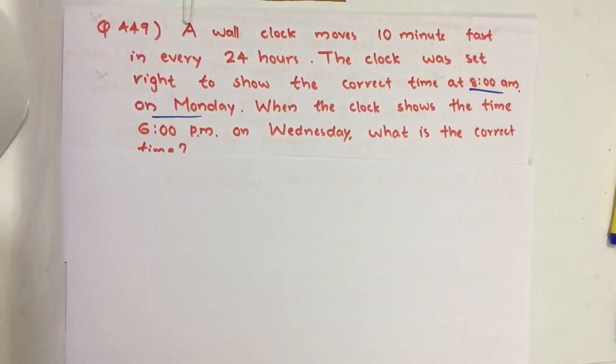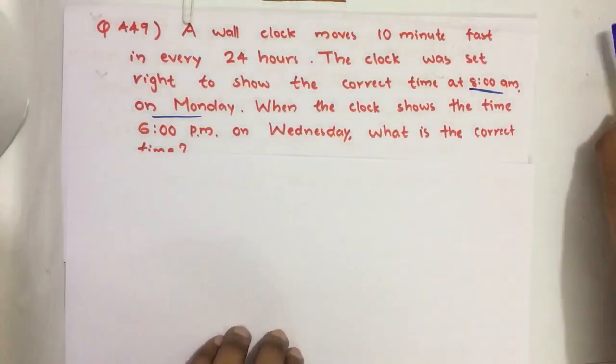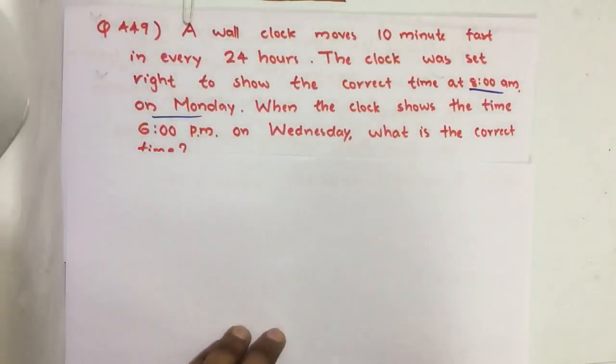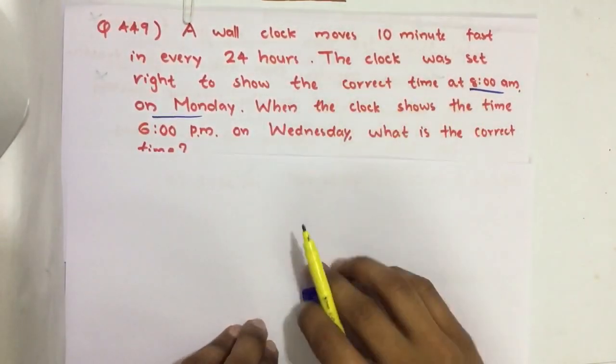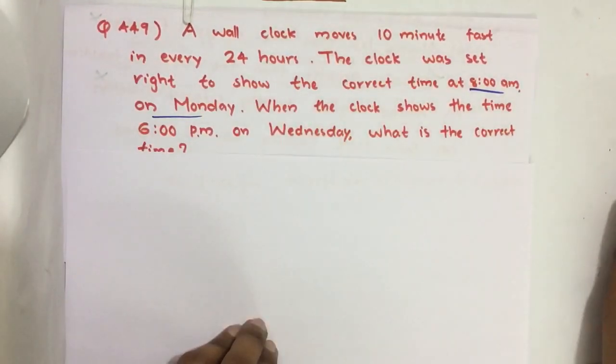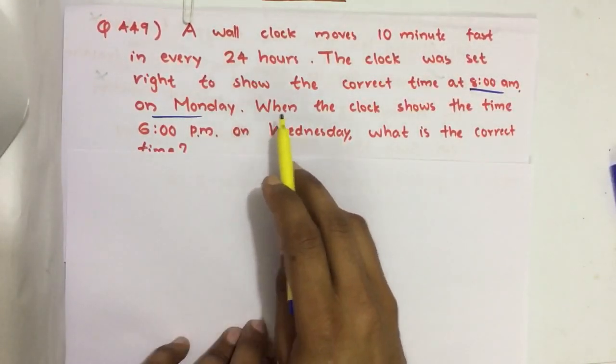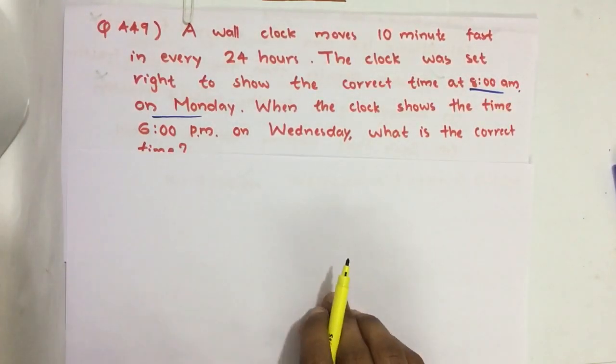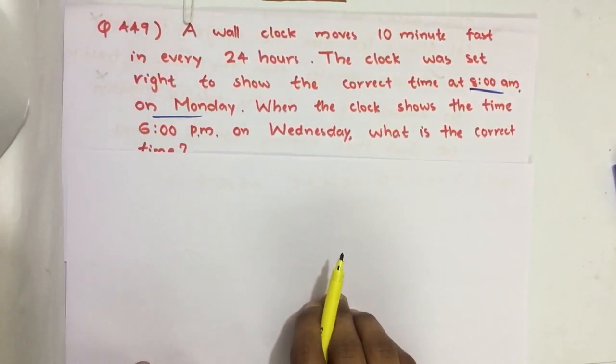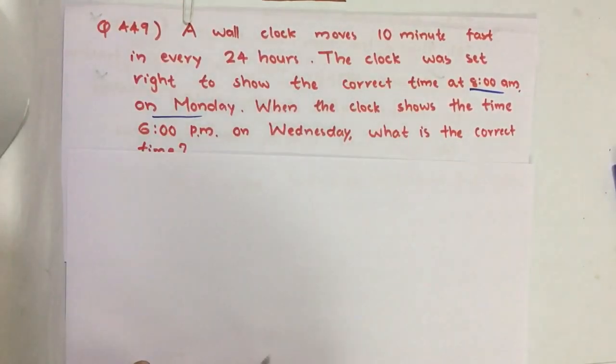Hello everyone, here I am going to solve 2019 CSAT question number 49 from question paper series A. A wall clock moves 10 minutes fast in every 24 hours. The clock was set right to show the correct time at 8 a.m. on Monday. When the clock shows the time 6 p.m. on Wednesday, what is the correct time?